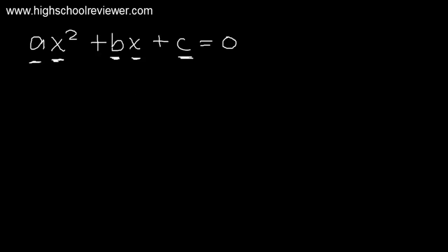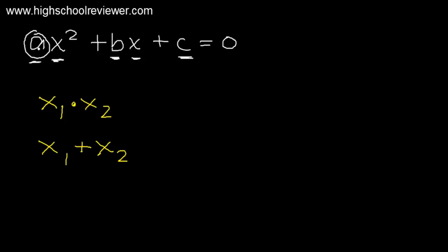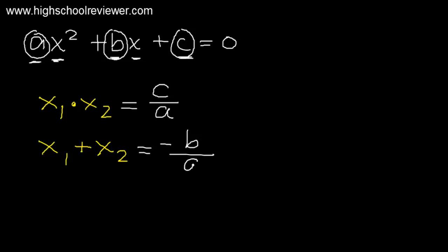For the product of the roots, we have x₁ times x₂, and for the sum of the roots, we have x₁ plus x₂. These are taken from the values of A, B, and C. The formula for x₁ times x₂ is C divided by A. The formula for the sum of the roots, x₁ plus x₂, is negative B all over positive A.